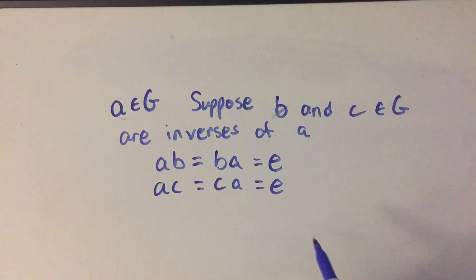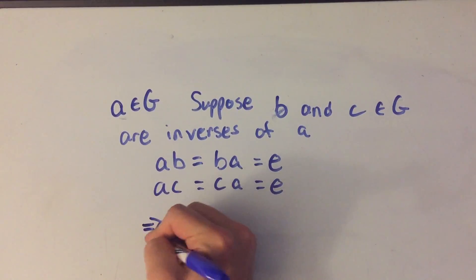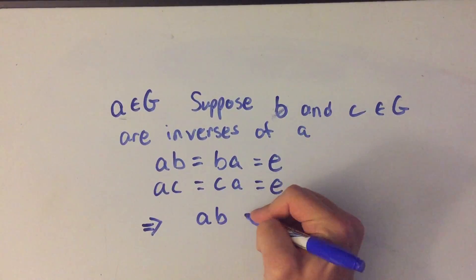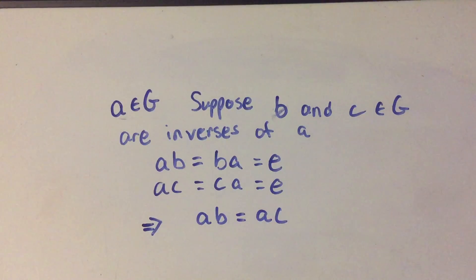Well, here I have that AB is equal to E, and I've got that AC is equal to E. That implies that AB has to equal AC.